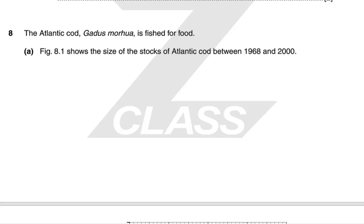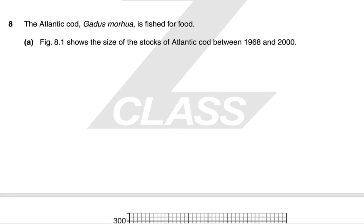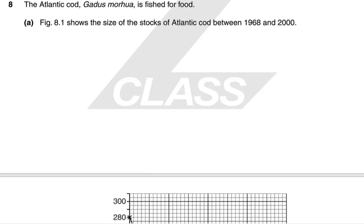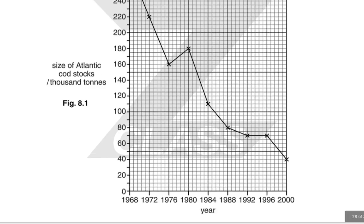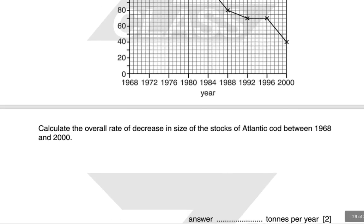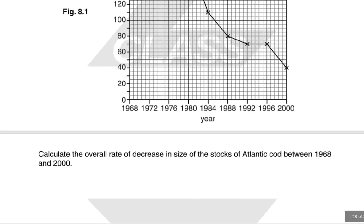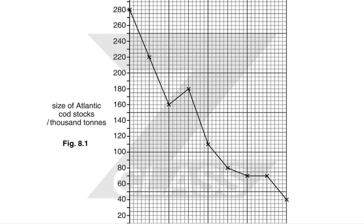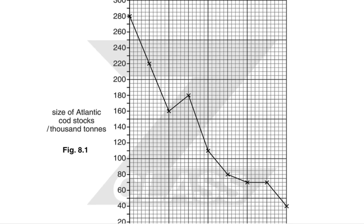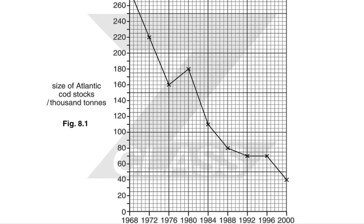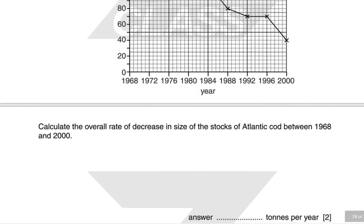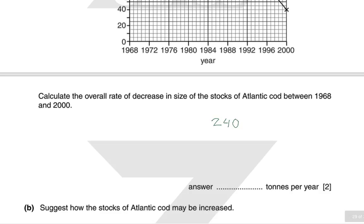Figure 8.1 shows the size of Atlantic cod stocks between 1968 and 2000. Starting at 280,000 tons in 1968 and falling to 40,000 tons in 2000, that's a decrease of 240,000 tons over 32 years. The overall rate of decrease is 240,000 ÷ 32 = 7,500 tons per year. Always check your units.